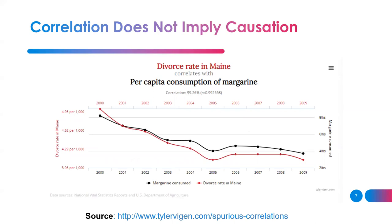It's important to differentiate between correlation and causation. We always say correlation does not imply causation — just because two curves behave the same way doesn't mean one is causing the other. There are many examples of this available online, and you need to understand that correlation does not imply causation.